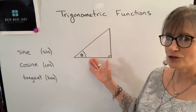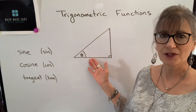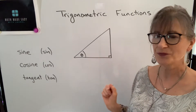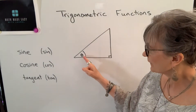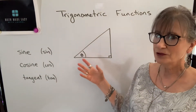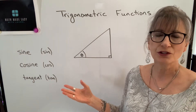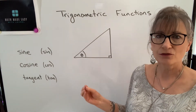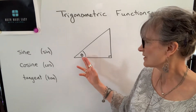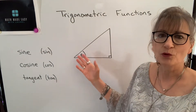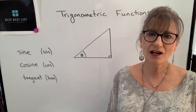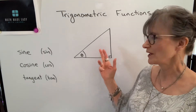I have drawn a right triangle here, so understand that these trig functions only work with right triangles. I've labeled this angle theta — it's a typical Greek symbol that we often use to represent angles, just like we often use X in algebra, so just accept that it's a symbol for an angle. The trig functions are simply ratios of sides in this right triangle.